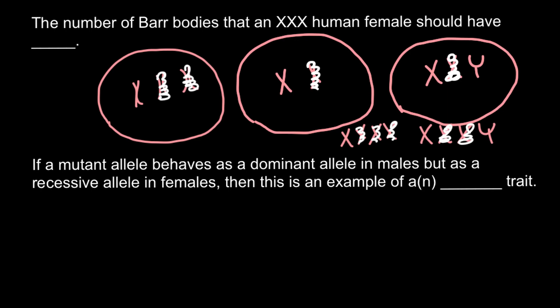What would we have if we had only one X chromosome and no Y chromosome? The gender would be female, and this female would not have any Barr bodies. Such a female would have only one active X chromosome, and we call this condition Turner syndrome. We call it a syndrome because the absence of the X chromosome leads to a number of different health problems.